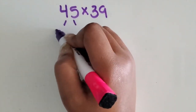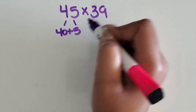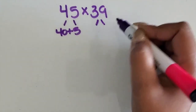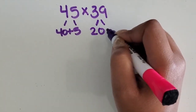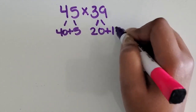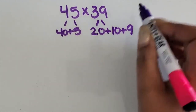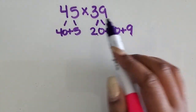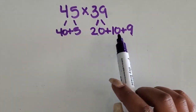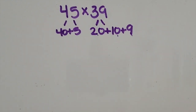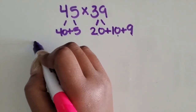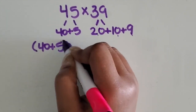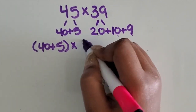I'm still going to keep this as 40 and 5, but this time I'm going to decompose the 39 into 20 and 10 and 9. So 20 and 10 is 30 plus 9 — I took the 39 and decomposed it into 20 plus 10 plus 9. Whatever the student is comfortable with, that's the way they can decompose that number. I'm going to write them with parentheses so they can clearly see what they are multiplying.